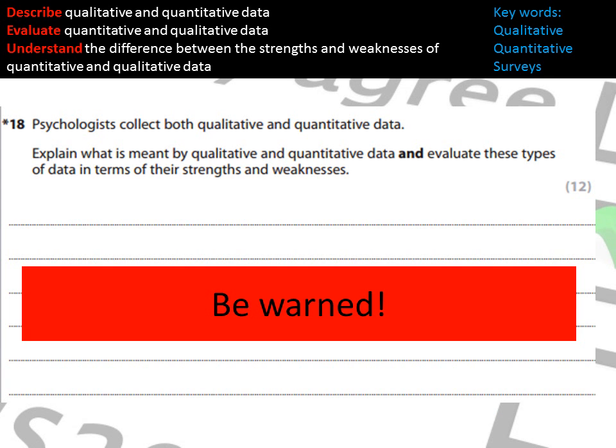I'm warning you about this for the exam. Previously it's been seen that this could be a 12-marker where you're asked about quantitative and qualitative data — where you've got to explain what they are, but also compare them and evaluate them in terms of strengths and weaknesses.